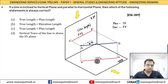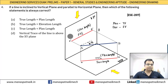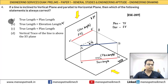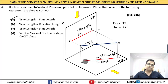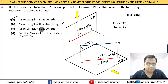In the top view, you also see the true length — the true length of this line is visible from the top. So true length is equal to plan length. The elevation length is actually less than the true length, making that option incorrect. True length equals plan length is the correct answer, and true length can never be less than plan length.